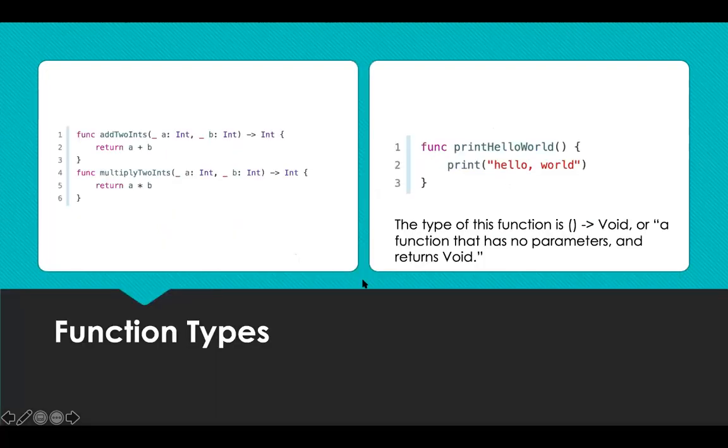Moving on, I also looked into function types. Every function has a specific function type made up of the parameter types and the return type of a function. This example on the left defines two simple mathematical functions called addTwoInts and multiplyTwoInts. These functions take two integer values and return an integer value, which is the result of performing an appropriate mathematical operation.